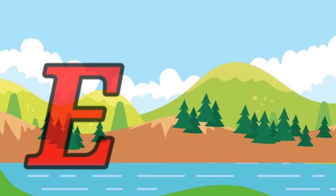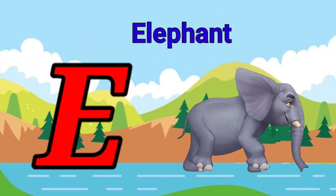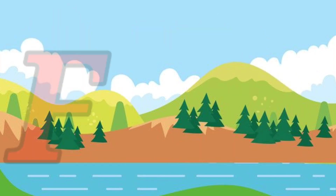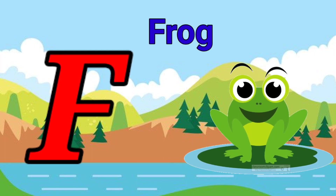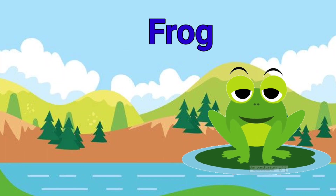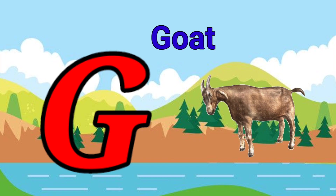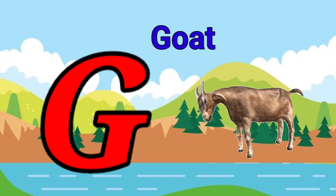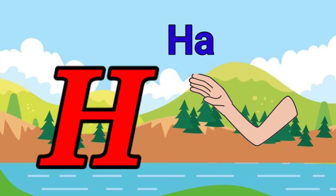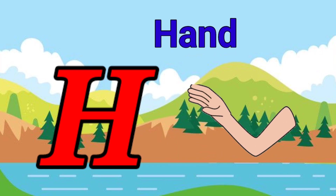E is for elephant, e-e-elephant. F is for frog, f-f-frog. G is for goat, g-g-goat. H is for hand, h-h-hand.